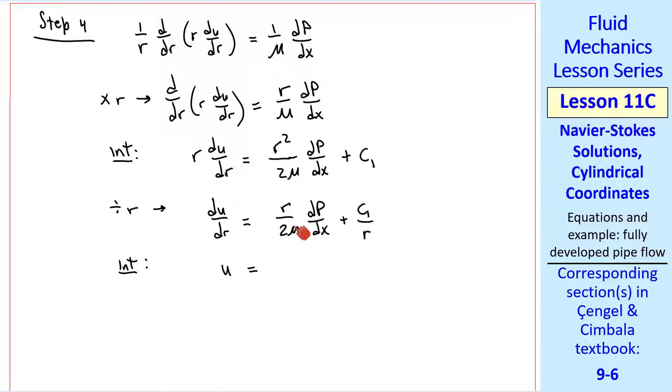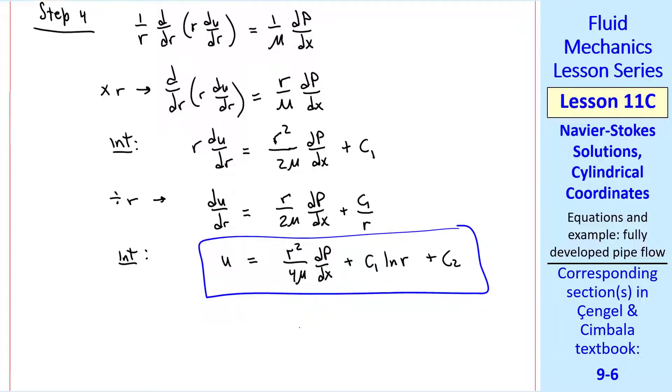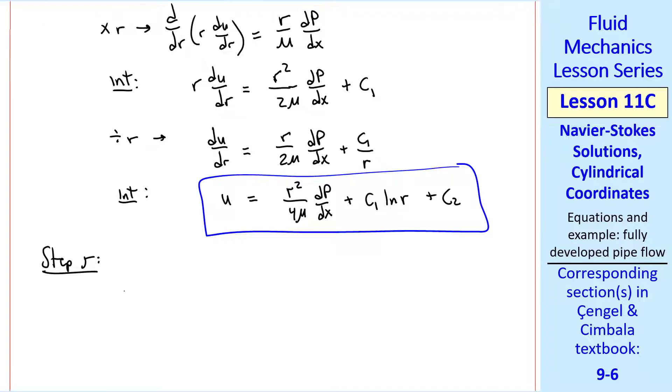Now we can integrate again. Again, everything's constant here except the r. So we get r² over 4μ dp/dx. This gives us c1 natural log of r plus another constant, c2. This is our velocity profile for u of r. But we need to find these constants.